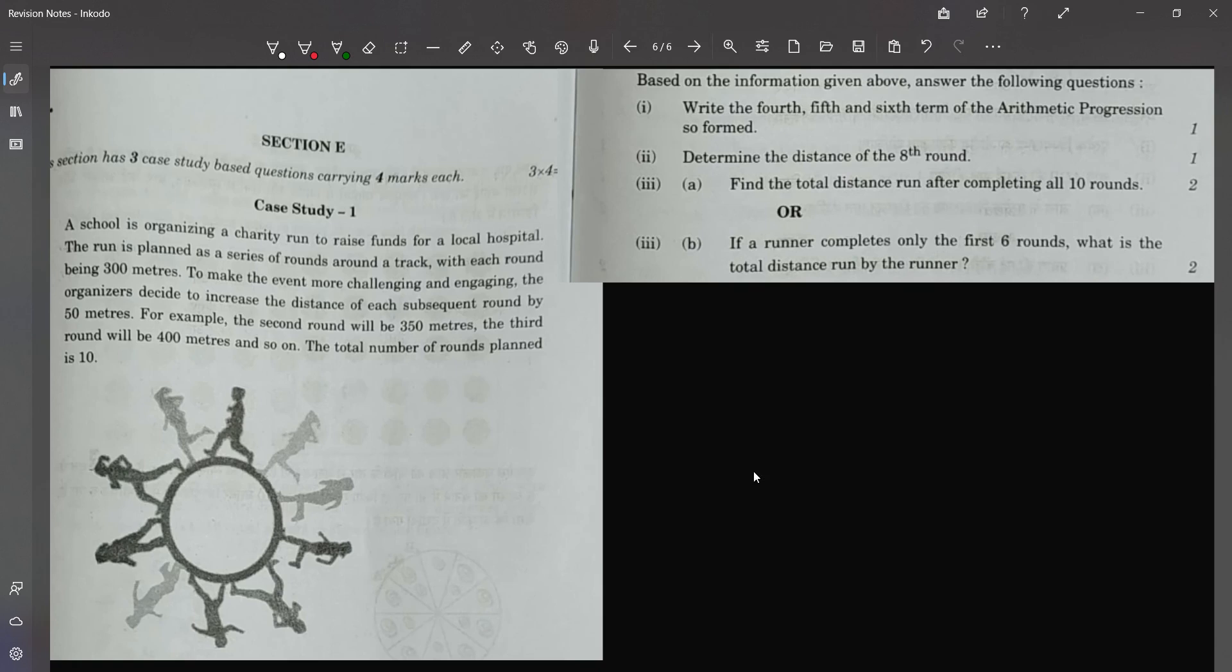For example, the second round will be 350 meters, the third round will be 400 meters. So clearly it's an arithmetic progression case study because in the first round it is 300, it goes on to become 350, 400 and so on.